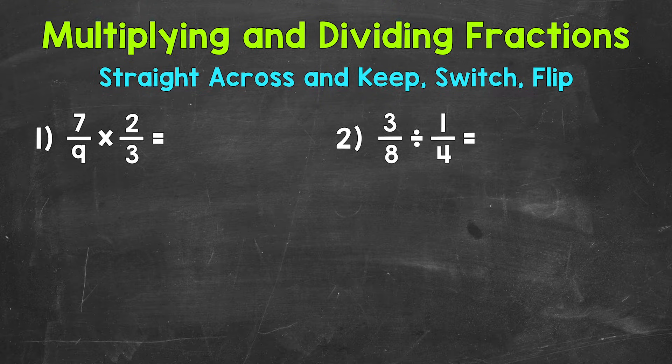Let's jump into our examples, starting with number one, where we have seven-ninths times two-thirds. Now when we multiply fractions, we multiply straight across. So numerator times numerator, the top numbers in our fractions, and then denominator times denominator, the bottom numbers in our fractions.